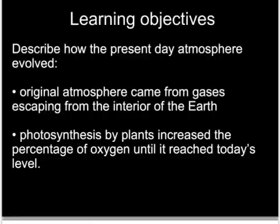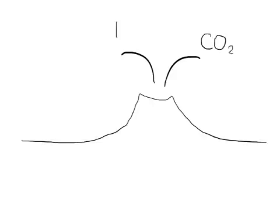At foundation level, you need to have a broad idea of how the current atmosphere came to be — how it evolved from the original atmosphere many millions of years ago. Scientists believe that when the Earth was first made, it was covered in volcanoes, and these volcanoes were spewing out lots of gas, particularly carbon dioxide and water vapour.